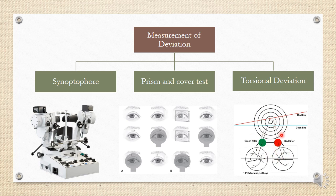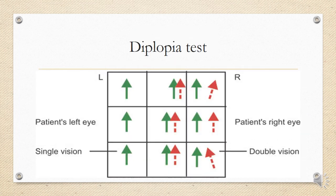Torsional deviation can be measured using software. The patient wears red-green anaglyph glasses, and the computer projects a red line and a green line. The patient aligns the two lines, and if torsional deviation such as extorsion is present, the patient sees the lines as tilted. As the patient moves the lines into alignment, the computer calculates the amount of torsional deviation.